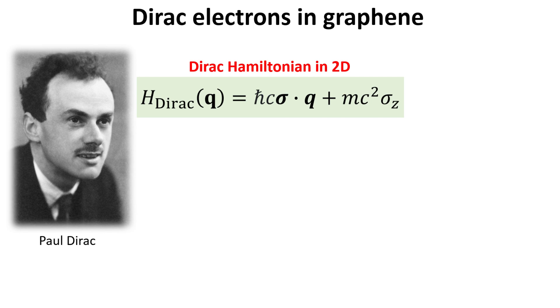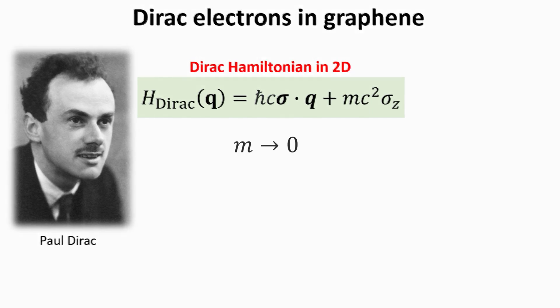The Dirac equation in two dimensions is explicitly written here. Here c is the speed of light and m is the fermion mass. Incredibly the Hamiltonian we derived for the pz state in graphene is of the Dirac type. This can be seen by letting the mass term vanish and letting the speed of light be the Fermi velocity v_F.